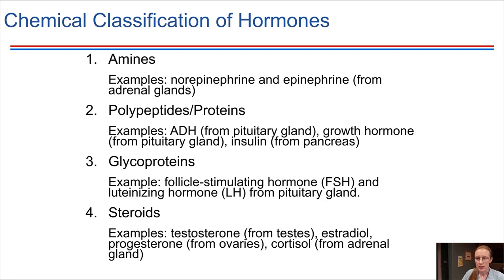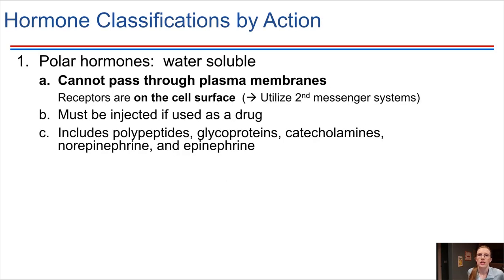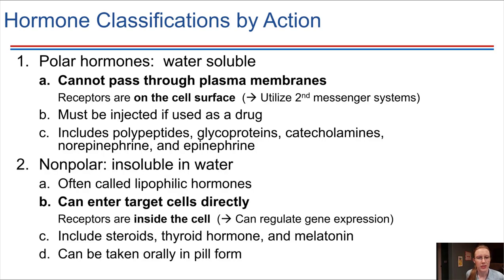Looking at classification by action, there are some hormones that can cross the plasma membrane and others that cannot. That's a big difference — being able to cross that membrane or not leads to different approaches in terms of how the hormone does what it does. Polar hormones — big polar molecules — generally cannot cross through the plasma membrane because it's lipid. So these hormones have to bind on the cell surface; the receptor is on the plasma membrane, and receptor binding then initiates a cascade of events inside the cell.